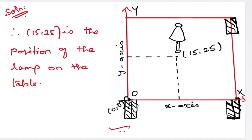That is, (15,25). We've taken an approximate value. Therefore, (15,25) is the position of the lamp on the table.